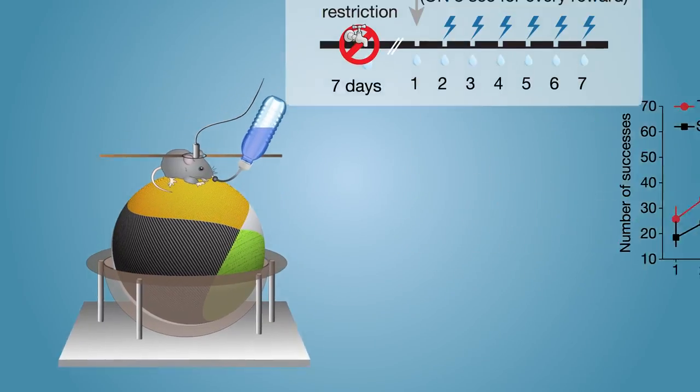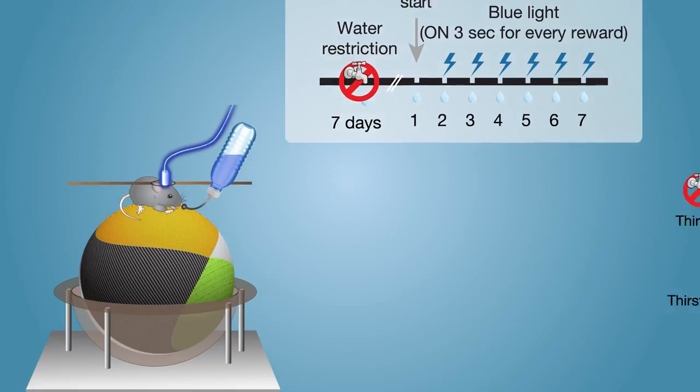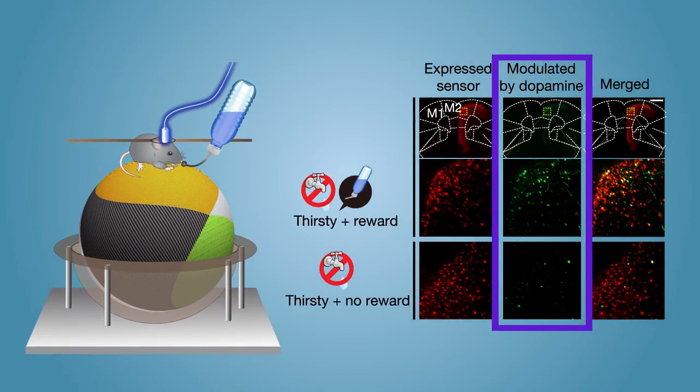So, when the researchers paired blue light with water delivery during learning, they could see the cells that transformed the dopamine reward signal into puzzle-solving behavior because they expressed the marker.